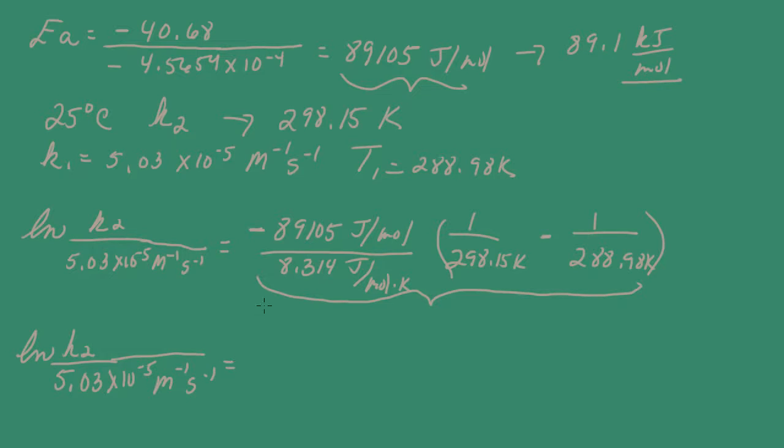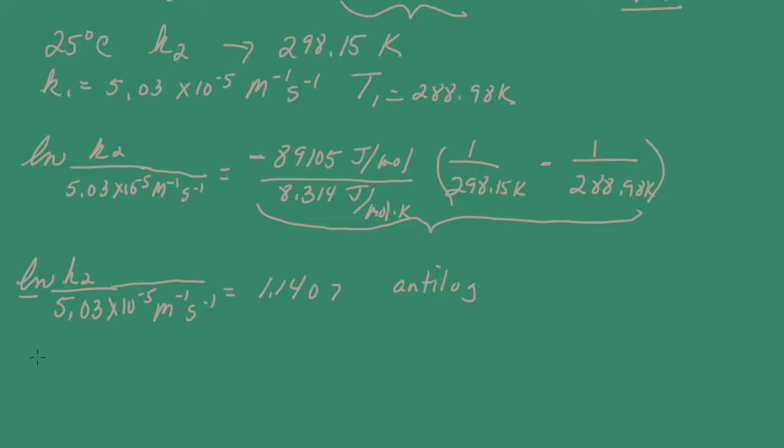I have the natural log of K2 divided by 5.03 times 10 to the negative 5, and that's equal to 1.14. I'm going to put a couple more digits in. Now I have to take the anti-log of both sides. We're dealing with natural logarithms, so I apply E to both sides. E to the natural log of something is just that argument, so this comes right out. That's 5.03 times 10 to the negative 5, and that's equal to E to the 1.1407.